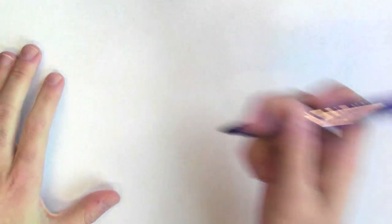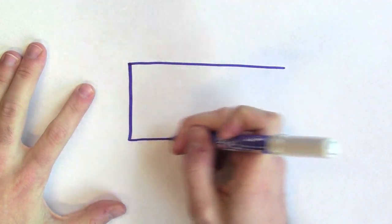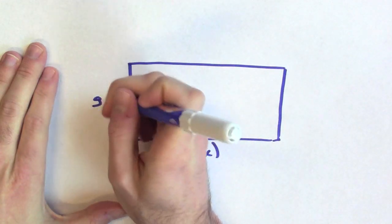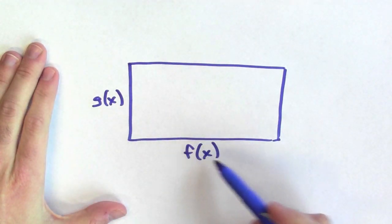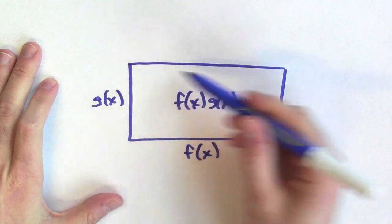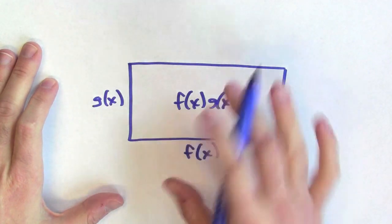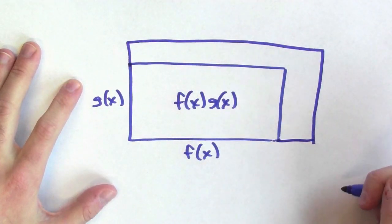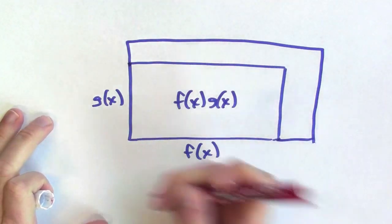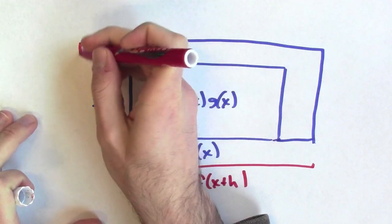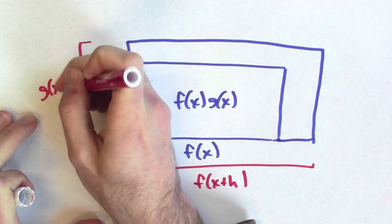We can see the same thing geometrically. Geometrically, the product is really measuring an area. So, let me start with a rectangle of base f of x and height g of x. The product of f of x and g of x is then the area of this rectangle. Now, I want to know how this area is affected when I wiggle from x to say x plus h. So, let's suppose that I slightly change the size of the rectangle so that now the base isn't f of x anymore. It's f of x plus h. And the height isn't g of x anymore. It's g of x plus h.